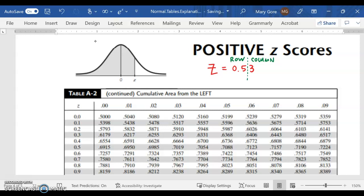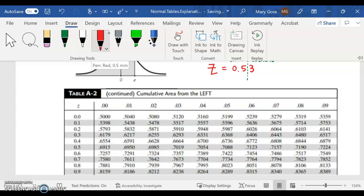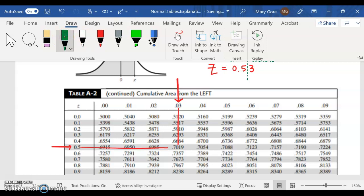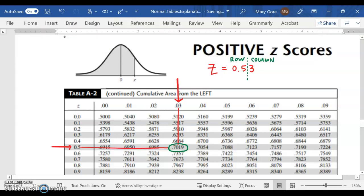We're going to go to the row 0.5, which is right here. Now the column we're looking for has a three in it in the hundredths place, so we're actually going to grab this column. We found our z-score in the table, and then we just continue our eyes over and see where they meet. They meet right here at 0.7019, and that's going to be our probability.